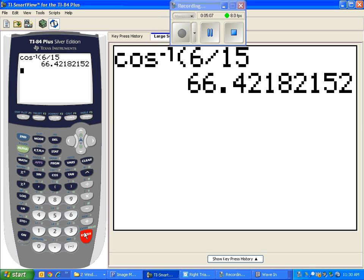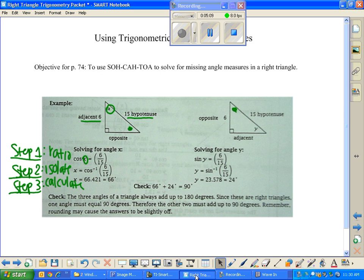Okie dokie. Step three, calculate. We have our angle. We are good to go. We found X. Now I'm going to jump over here and talk you through finding Y.